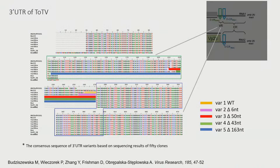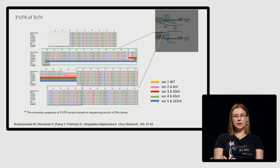Bardzo znana metoda unikania przez wirusa reakcji obronnej rośliny to duża zmienność genetyczna, szczególnie u RNA wirusów – któryś wariant przetrwa obronę przeciwwirusową. Ta zmienność może wpłynąć na transmisję przez owady i adaptację do owadów przenoszących wirusy – co obserwowaliśmy w naszych badaniach.